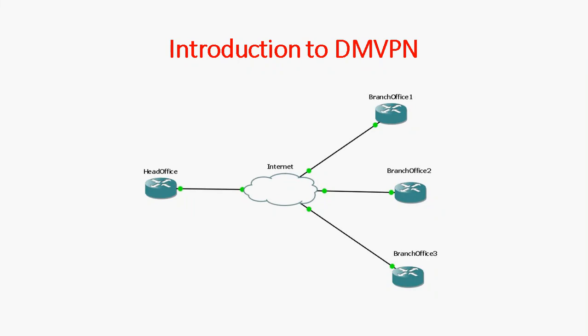Similarly, branch office 1 to branch office 2 and branch office 2 to branch office 3 each need separate tunnel interfaces with source and destination IP addresses configured. The configuration overhead becomes very high and it's easy to mess up the configuration.